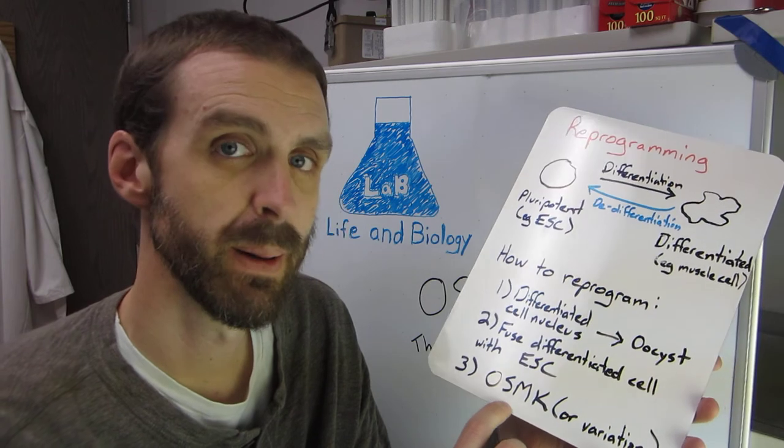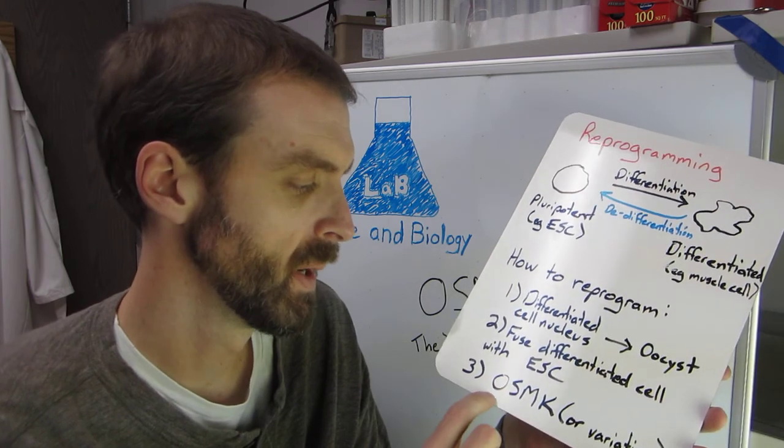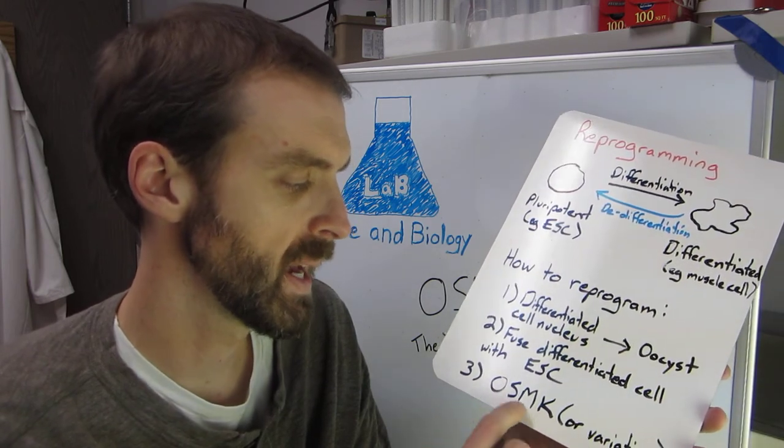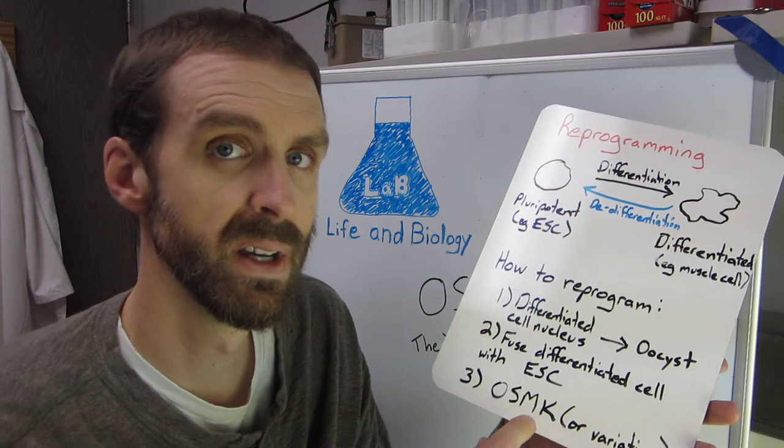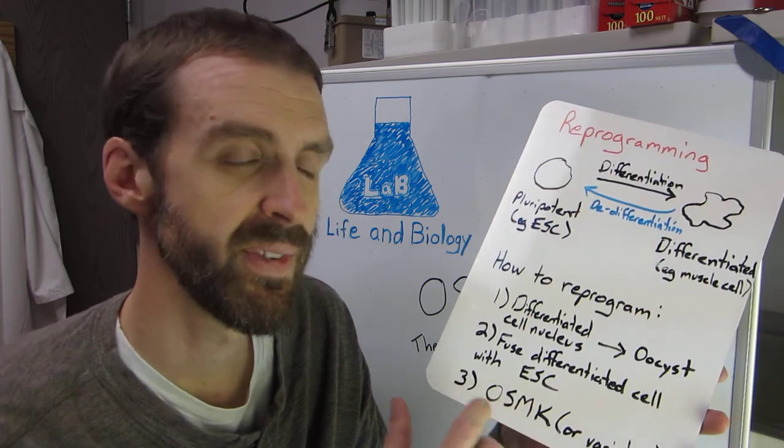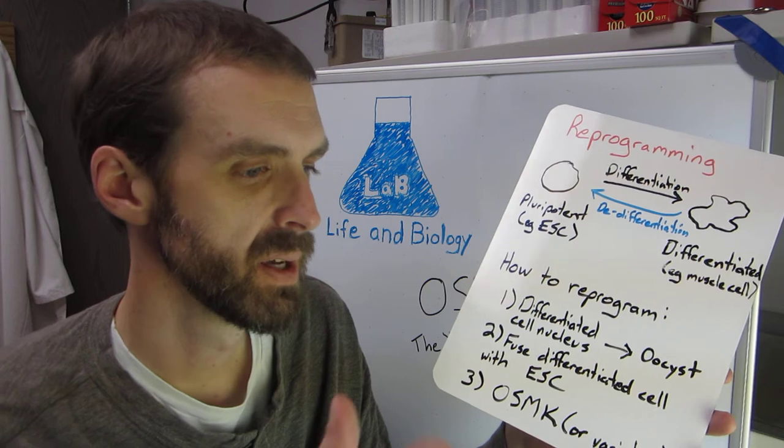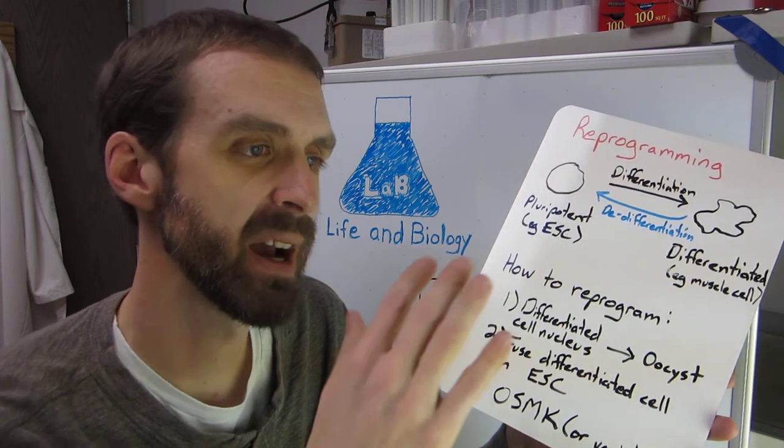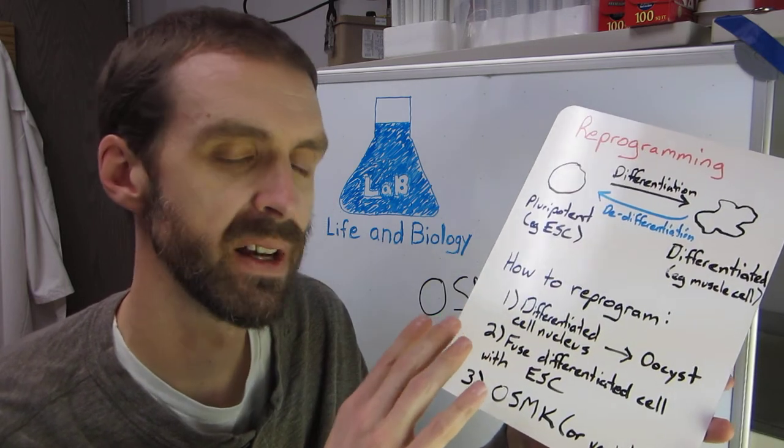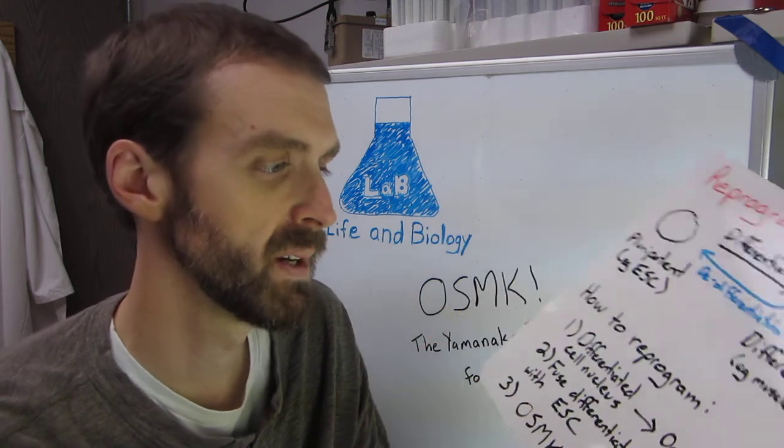But what they come up with in this Yamanaka paper is O-S-M-K, where each of these is a letter for a certain factor that allows a differentiated cell to go back to an embryonic stem cell. And they call that an induced pluripotent stem cell.